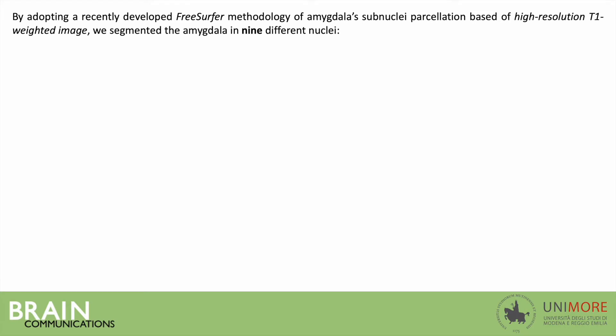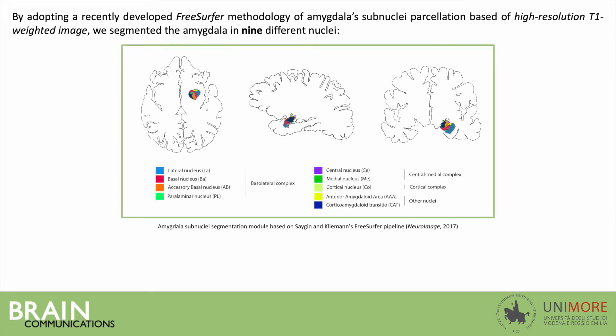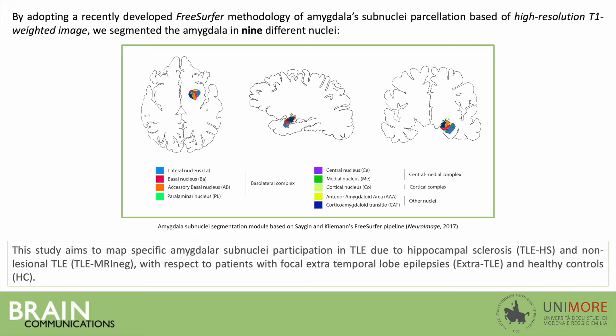By adopting a new FreeSurfer methodology of amygdala subnuclear segmentation based on high-resolution T1-weighted images, we segmented the amygdala into nine different nuclei. The nine nuclei were organized in groups or complexes based on their reciprocal connections and specific functions. This study aims to map specific amygdala subnuclear participation in TLE due to hippocampal sclerosis and non-lesional TLE, with respect to patients with extra-temporal lobe epilepsies and controls.